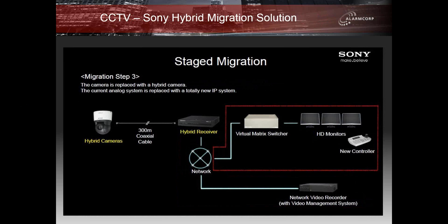When all cameras have been changed over and the IP side is commissioned — all profiles set up and recording — you can effectively remove the analog component from the system. However, you may want to leave it in place running for 30 to 90 days because any footage required for an incident is still on the old platform. Once it has passed its useful time, it can be decommissioned and removed from the rack.